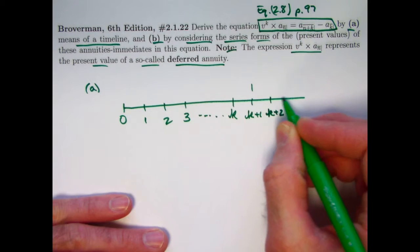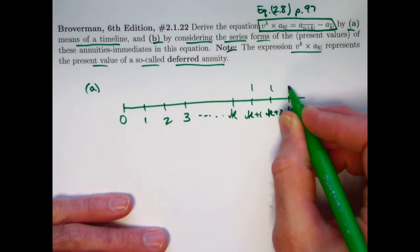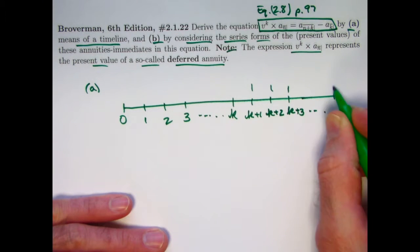There's going to be N payments of one at times K plus one, K plus two, K plus three, et cetera. If it's N payments, the last payment is going to be at time K plus N.